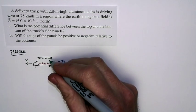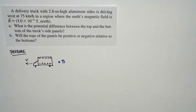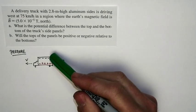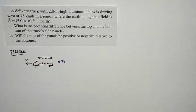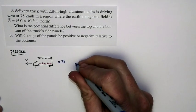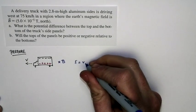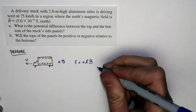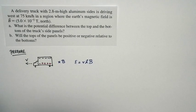And so the top of the panels is going to be negative compared to the bottom. And there will be a potential difference between the top. This is motional EMF. And we know that the magnitude of motional EMF is equal to V times L times B. And that sets us up for our solution.